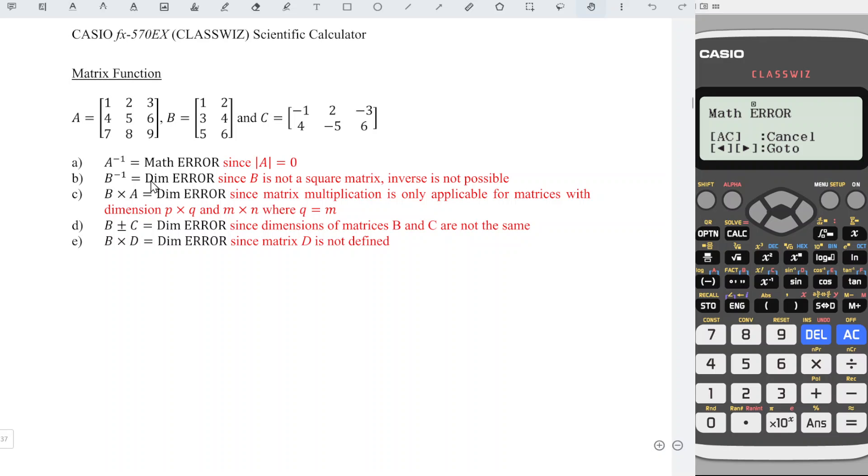Part B, inverse of matrix B. Press AC, option to get matrix B number 4, inverse and we press equal. This time, we obtain dimension error because it's not possible to obtain inverse for non-square matrix.